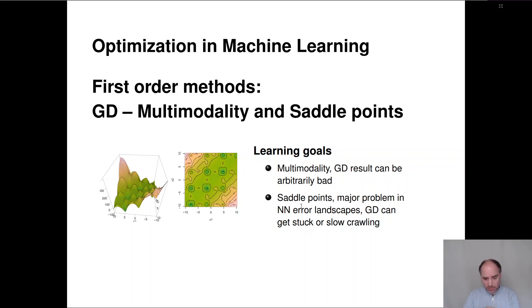Saddle points are actually a major problem in neural network error landscapes. Usually the problems are not arbitrarily bad local minima. Local minima are already of good quality in many neural network error landscapes, but saddle points can really either slow down gradient descent a lot or we can get completely stuck in them.